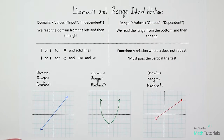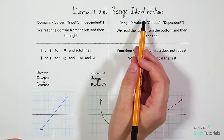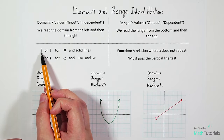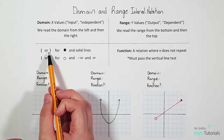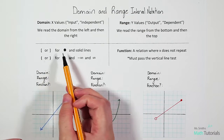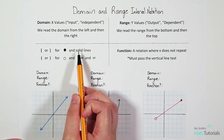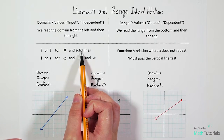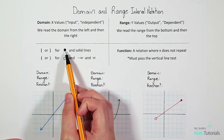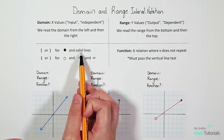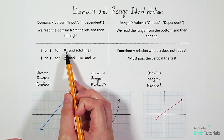To answer domain and range in interval notation, we're going to use brackets — either facing left or right depending on the situation. We use brackets for solid points and solid lines. A solid line is made up of solid points, so a solid line always counts as a solid point.